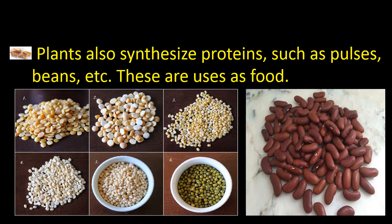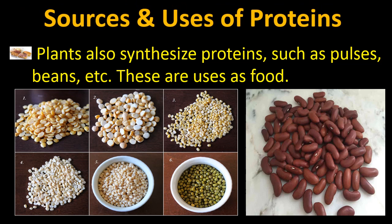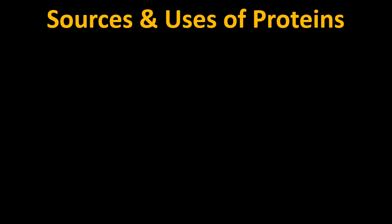Now it's time to move towards plant proteins. Plant proteins such as pulses, beans and so many other foods like this — we use the simple term cereals — and these cereals are the basic source of plant protein.